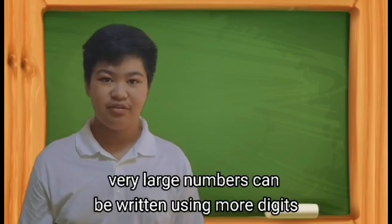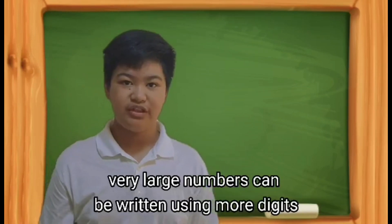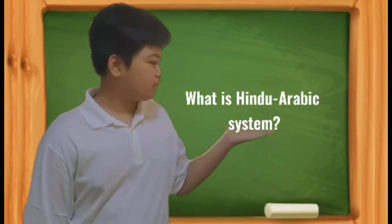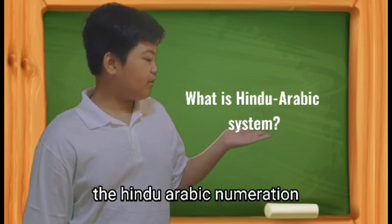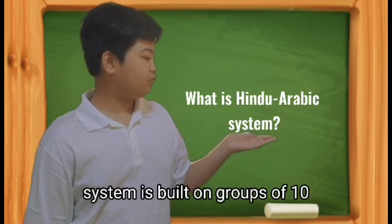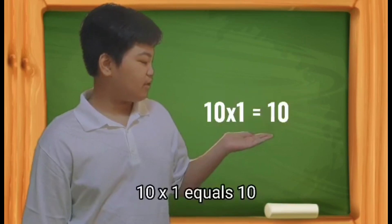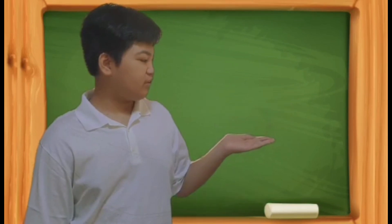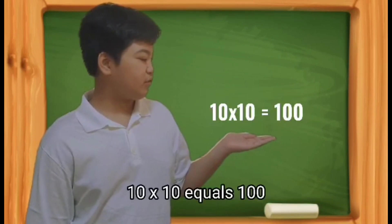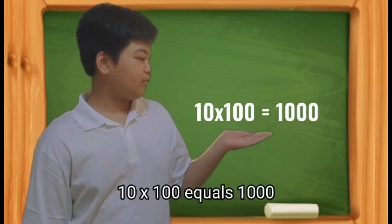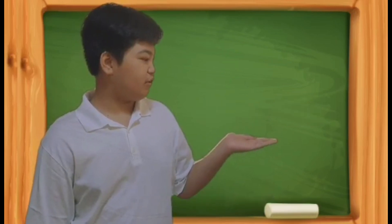Very large whole numbers can be written using more digits. The Hindu-Arabic numeration system is built on groups of 10. 10 times 1 equals 10, 10 times 10 equals 100, 10 times 100 equals 1000, and so on.